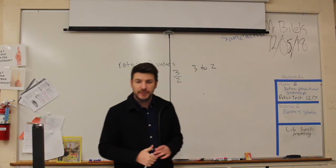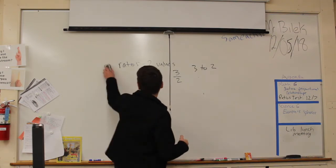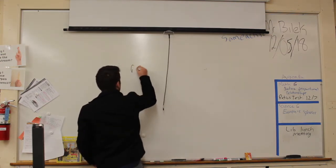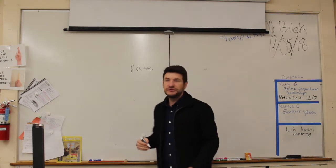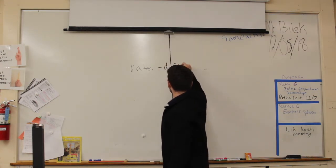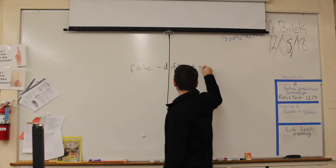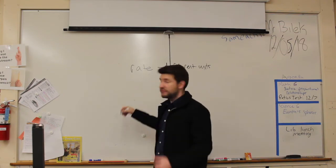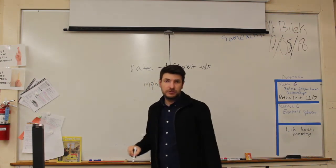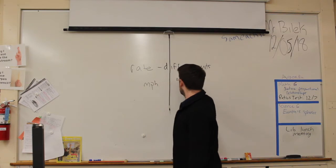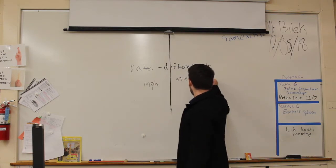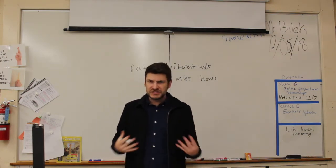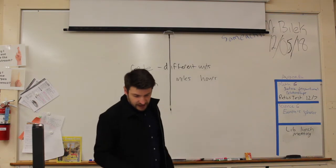A little bit different would be a rate. Now, a rate, you're also comparing two values, but in a rate you're comparing two values with different units. For example, if you're comparing, let's say a good example of a rate is miles per hour, because we're comparing miles and we're comparing hours. Very different units that we're putting together to make some sense of things.